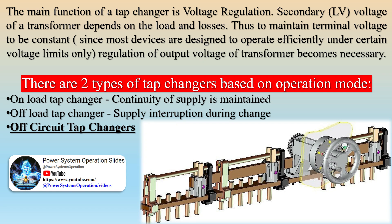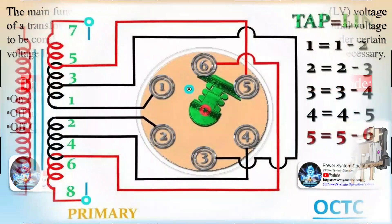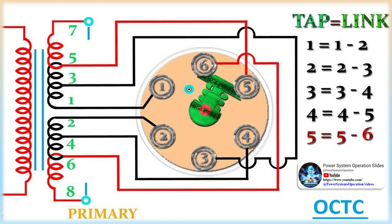By the relatively simple addition of a remote tap position sensor, a monitor will track and trend the total operations, number of operations at each position, and the I²t to provide an idea of contact wear. If the monitoring system also provides control, the tap position sensor can provide positive feedback that the tap changer successfully changed taps when the raise or lower command was issued. The main function of a tap changer is voltage regulation — the secondary (LV) voltage of a transformer depends on the load and losses, and regulation of the output voltage becomes necessary.